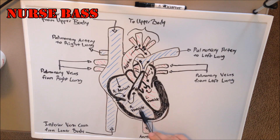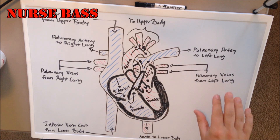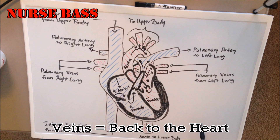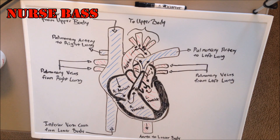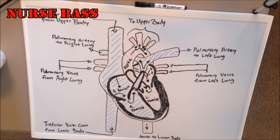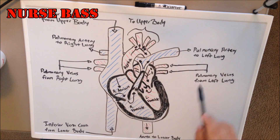The right ventricle contracts and forces blood through the pulmonic semilunar valve and up into your pulmonary arteries. Now, in regards to the pulmonary arteries and pulmonary veins, this is the only place in the body where it's sort of flip-flopped. We think about arteries as carrying oxygenated blood away from the heart to the body, and veins as carrying deoxygenated blood returning to the heart — and this is true in every case except for the pulmonary arteries and pulmonary veins. The pulmonary arteries carry deoxygenated blood away from the heart toward the lungs, and whenever blood returns to the heart via the pulmonary veins, it's carrying oxygenated blood.